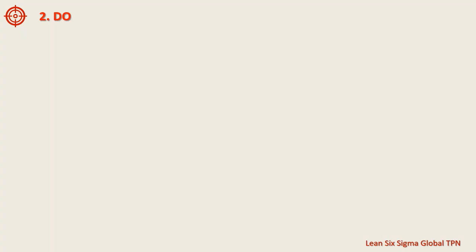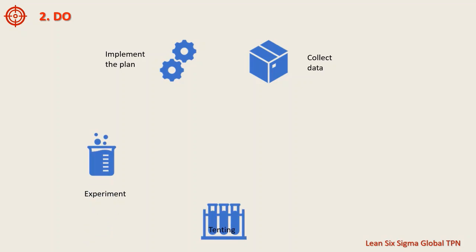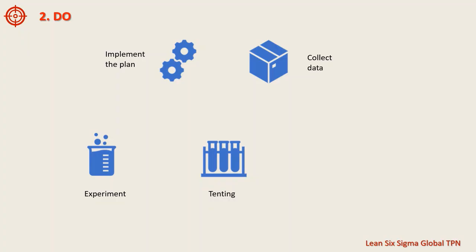The second step of the PDCA cycle is Do. In this step, you implement the plan and collect the data on the results. This could include running experiments, testing new processes or systems, or implementing new products or services.